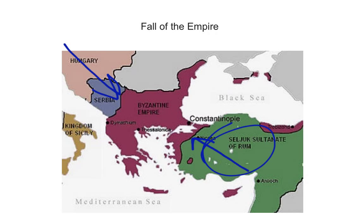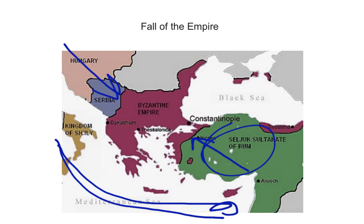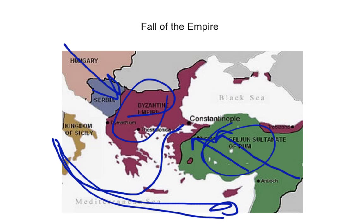The Crusades are taking place, which really involves Western Europeans trying to take back the Holy Land, but the Fourth Crusade in 1202 diverts and attacks Constantinople instead. Ultimately, what's going to happen is the Ottoman Empire takes over the region. They advance into the Byzantine Empire, enclose in on Constantinople, eventually conquer and overthrow it — and this is when it becomes Istanbul. This takes place in 1453, and that is when the Byzantine Empire is over.